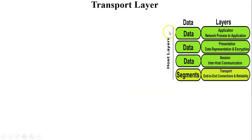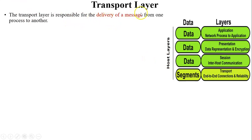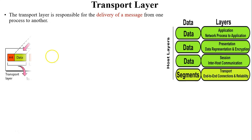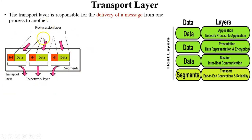The next layer is the transport layer. When data comes from the session layer to the transport layer, data is converted into segments. These four upper layers are called host layers. The transport layer is responsible for delivery of a message from one process to another process. There are two protocols in the transport layer: TCP, which is reliable and connection-oriented, and UDP, which is non-reliable and connectionless. At the sender side, data is converted into segments, a header is added indicating TCP or UDP, and data is passed to the network layer.